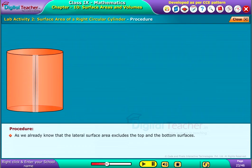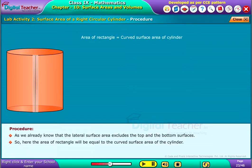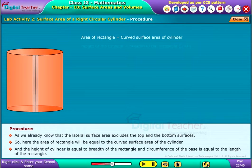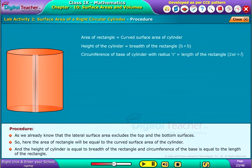As we already know that the lateral surface area excludes the top and the bottom surfaces. So here, the area of rectangle will be equal to the curved surface area of the cylinder. And the height of cylinder is equal to breadth of the rectangle and circumference of the base is equal to the length of the rectangle.